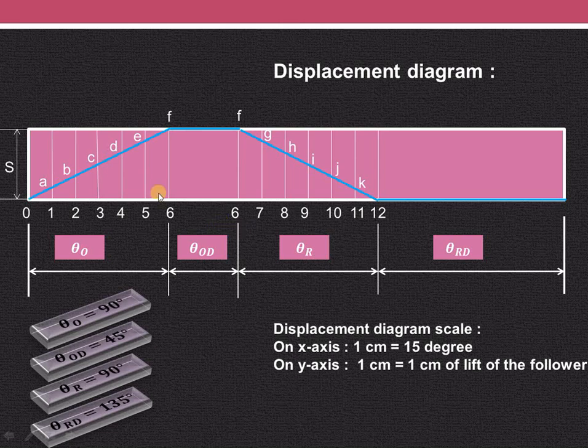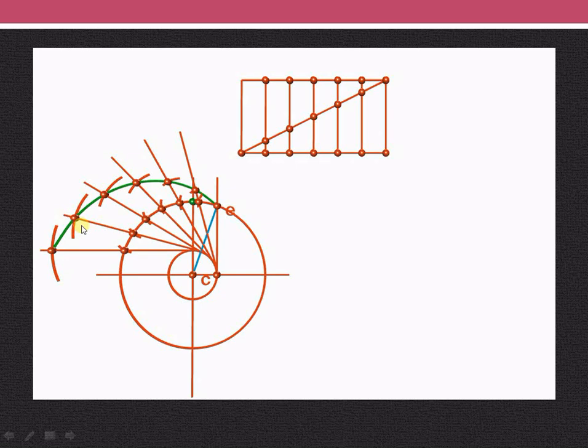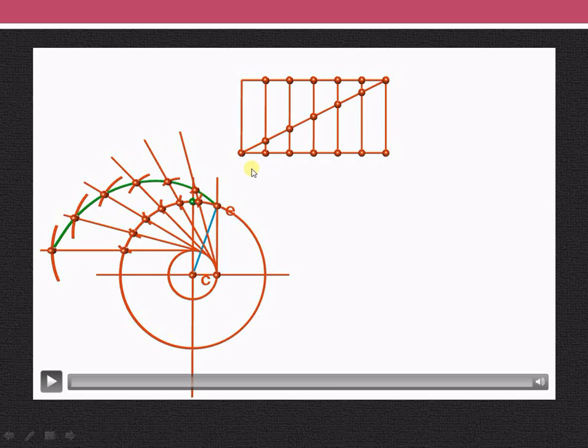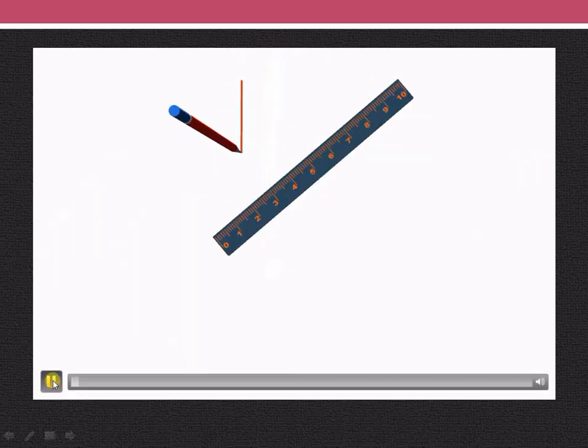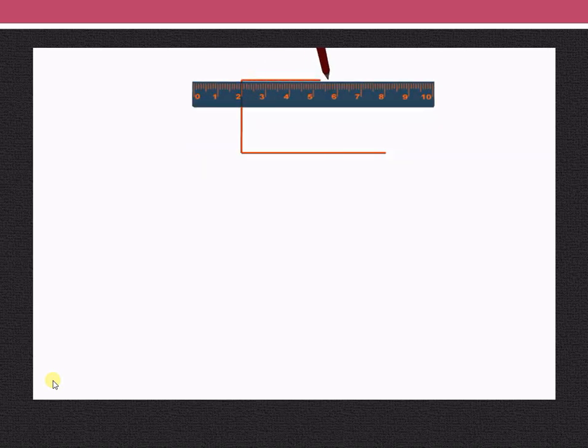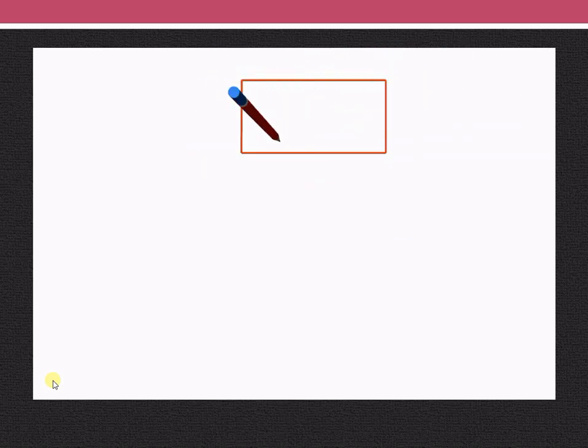Now in the next animation we have considered this outstroke. So outstroke is of 90 degree, that is basically it is 6 cm length. And then we have divided it into 6 equal parts. And let us see what will be the procedure for drawing the cam profile in case of the offset follower. So as seen earlier, we are dividing this outstroke into 6 equal parts: 1, 2, 3, 4, 5 and 6.